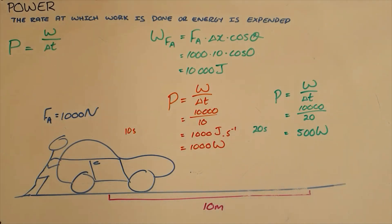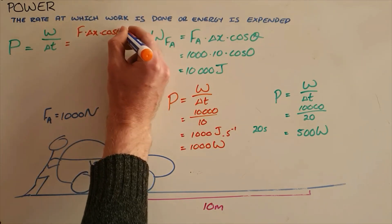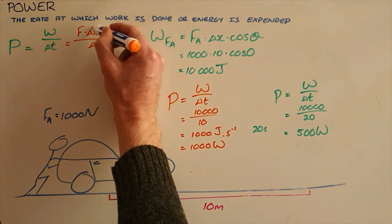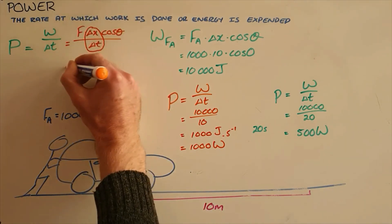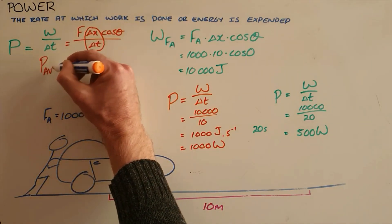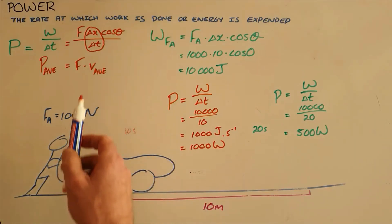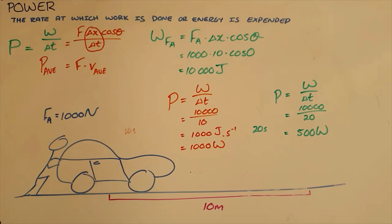Power is often the last question in a work-energy problem: once you have calculated the work done or the net work, you can find the power output when given a time. The formula can also be adapted: since W = F × d × cosθ, and displacement over time is velocity, we get that average power P_avg = F × v_avg. This allows us to calculate the power output for any object moving at constant velocity using just the force and the average velocity.